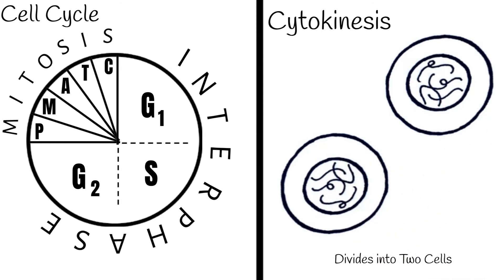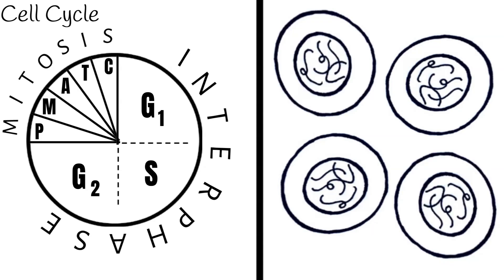Now you have two new cells. Those cells can then go on to do their own cell cycle and create even more cells.